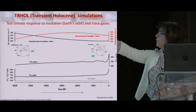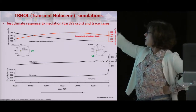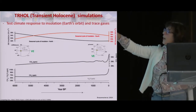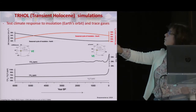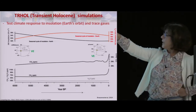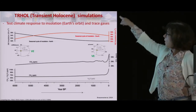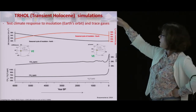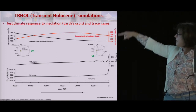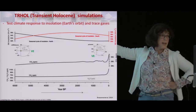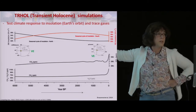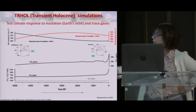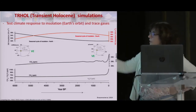For CO2, you can see something that is smooth — the trace gases come from ice-core reconstructions, and it's almost flat except for a small increase in the Holocene, and then the large increase at the end. The reference is year 1950.